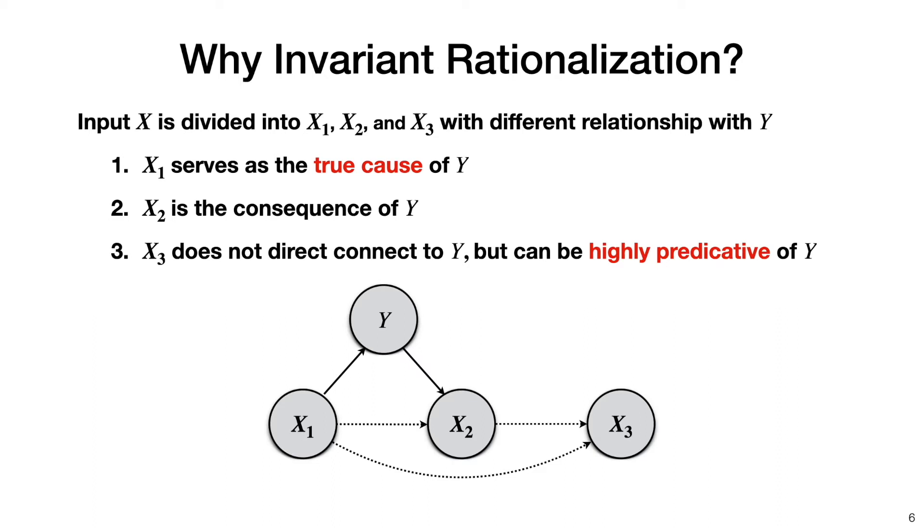This probabilistic graph has a nice correspondence with the beer review example given just now. The review on the smell aspect, which is the true explanation, corresponds to x1. The overall review corresponds to x2, and the review on the palate aspect corresponds to x3.